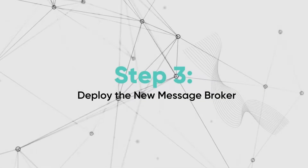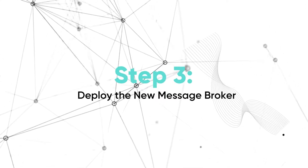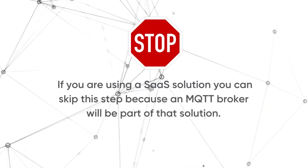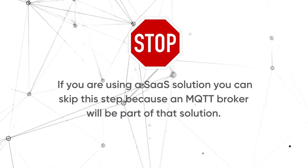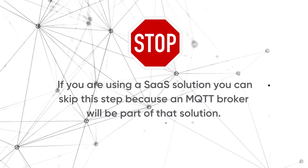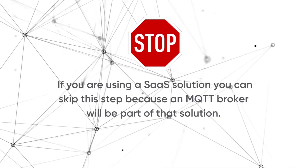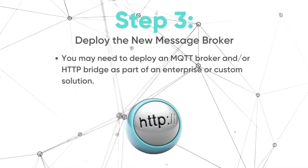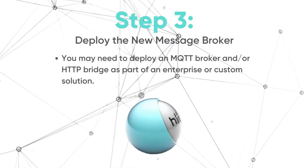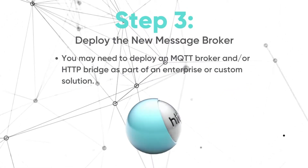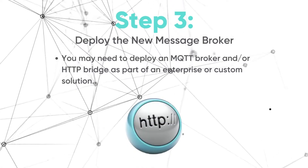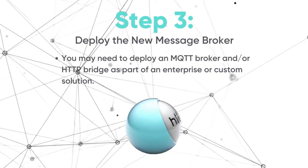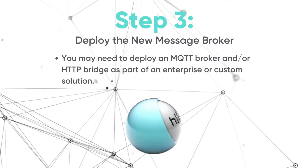Utilization of an IoT platform that does not conform to IoT Core's registry structure may require additional effort. Step three: deploy the new message broker. If you are using a SaaS solution, you can skip this step because an MQTT broker will be part of that solution. But if you're using an enterprise or custom solution, you will need to deploy an MQTT broker and/or HTTP bridge.